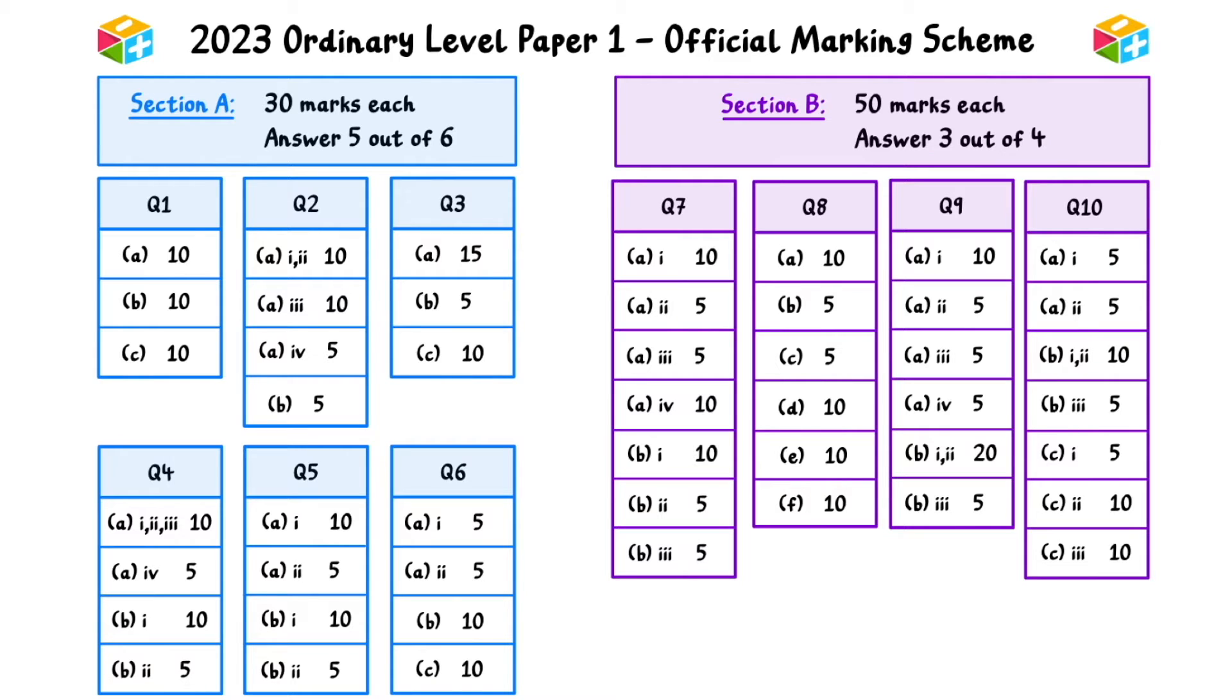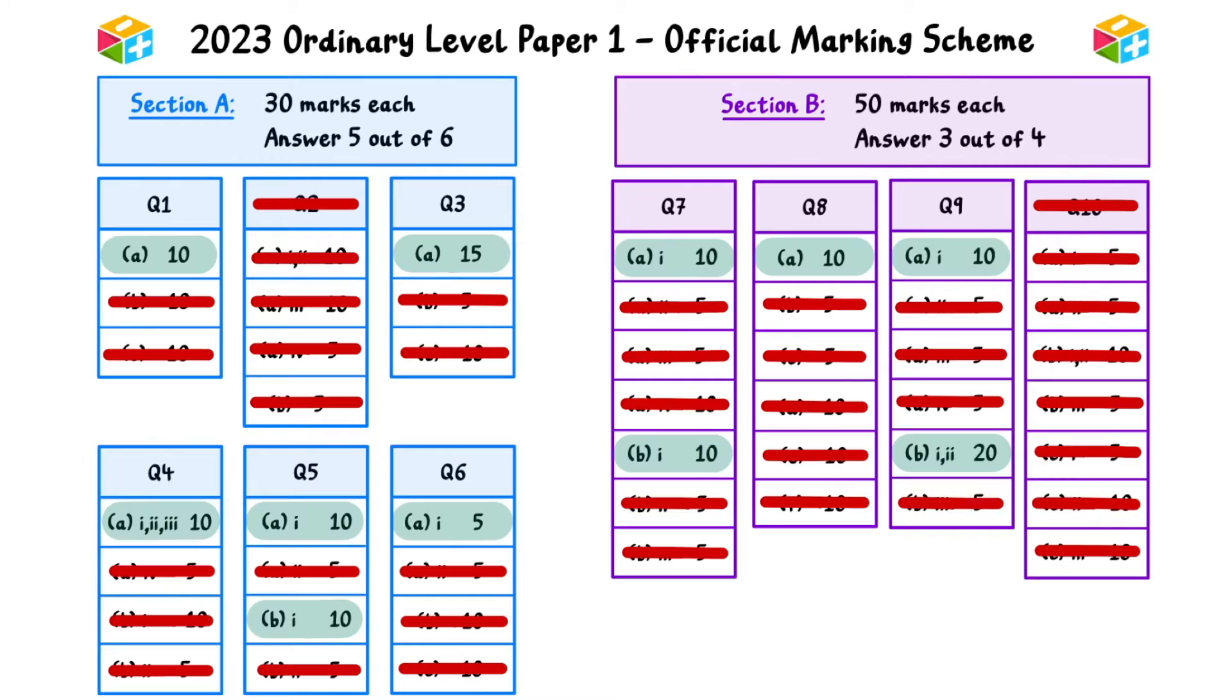All in all, both sections were worth 150 marks, bringing the total to 300 marks for the paper. To achieve a passing grade of 40%, you would need to score at least 120 marks. After analyzing the paper, I've pinpointed the easiest and most effective way to reach this threshold. Solving the highlighted questions would secure a passing grade.